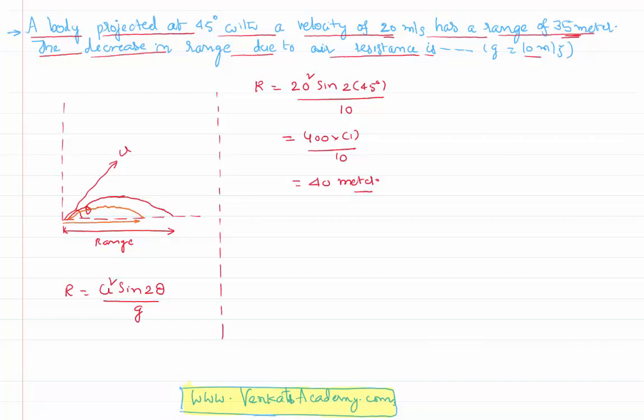Because of air resistance, the range is only 35 meters. It is supposed to be 40, but it became only 35 meters. That implies the decrease in the range of the body is 40 minus 35, so the decrease is 5 meters.